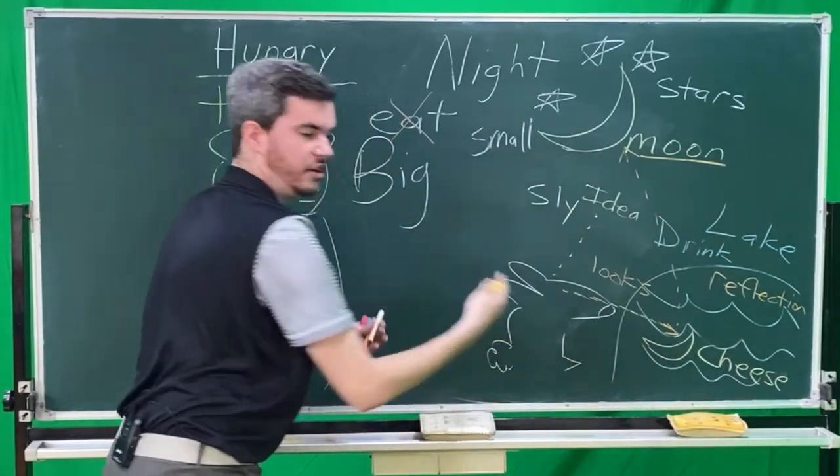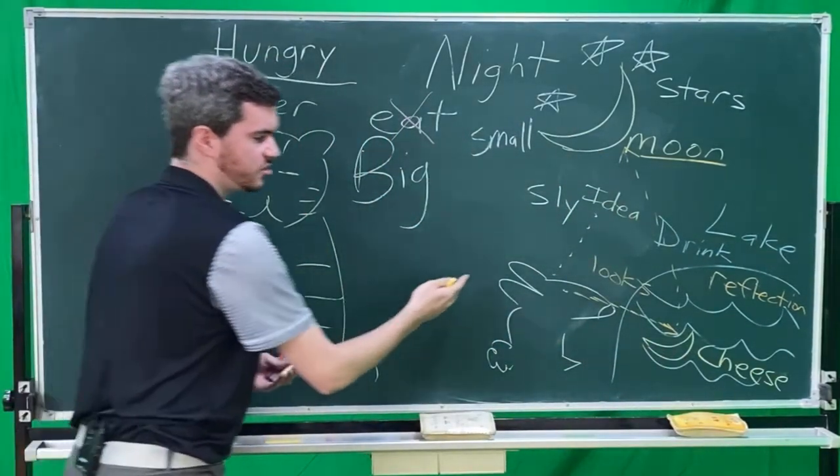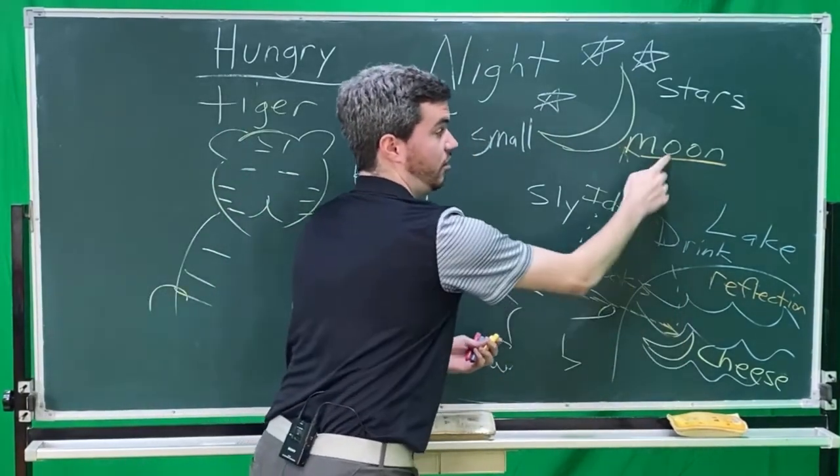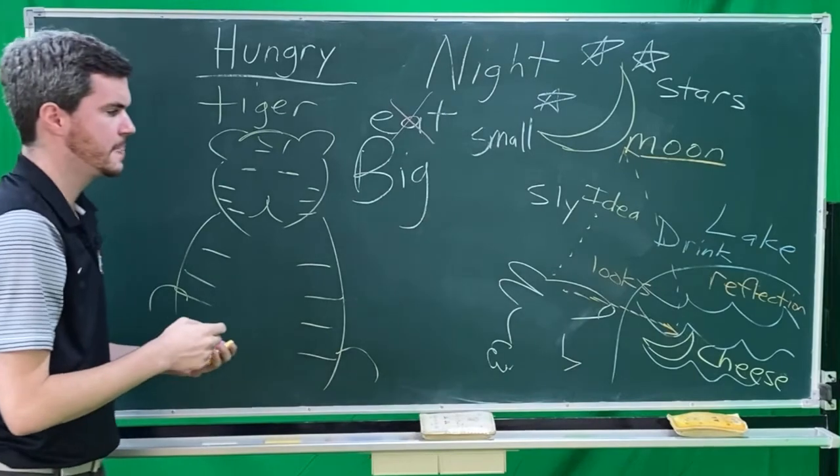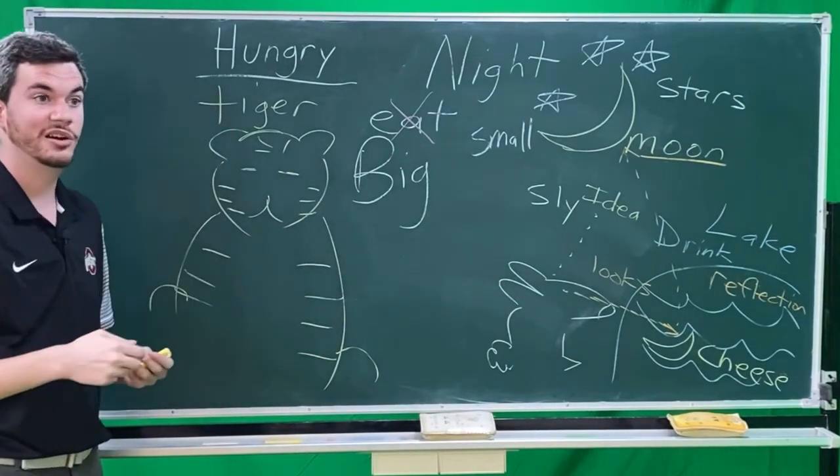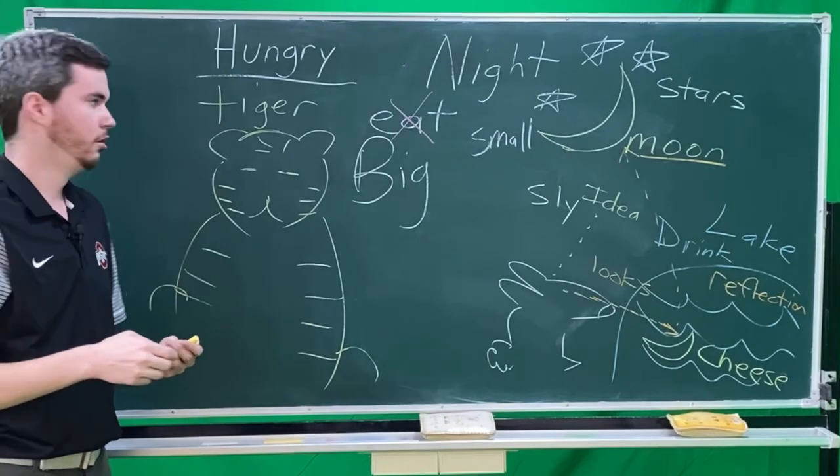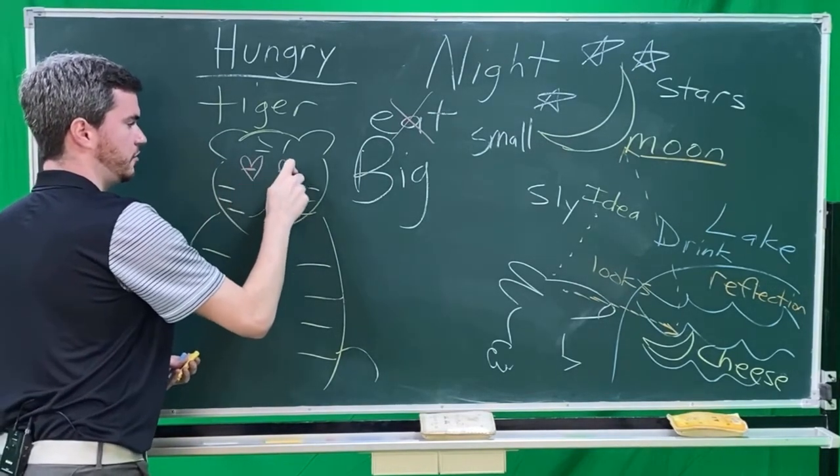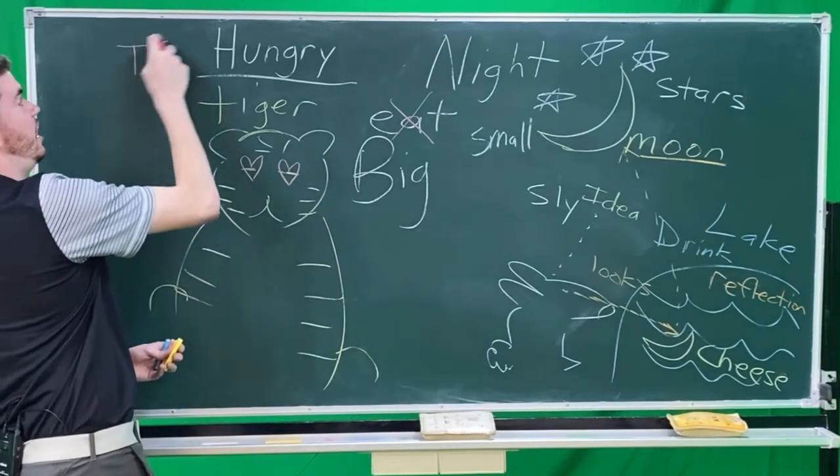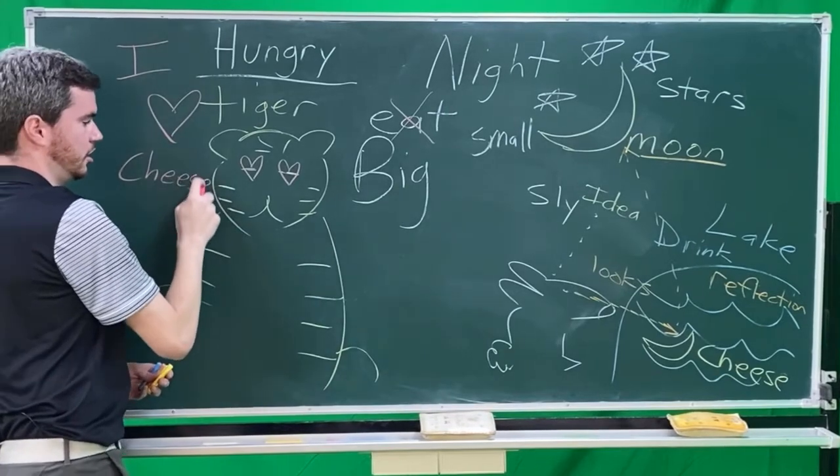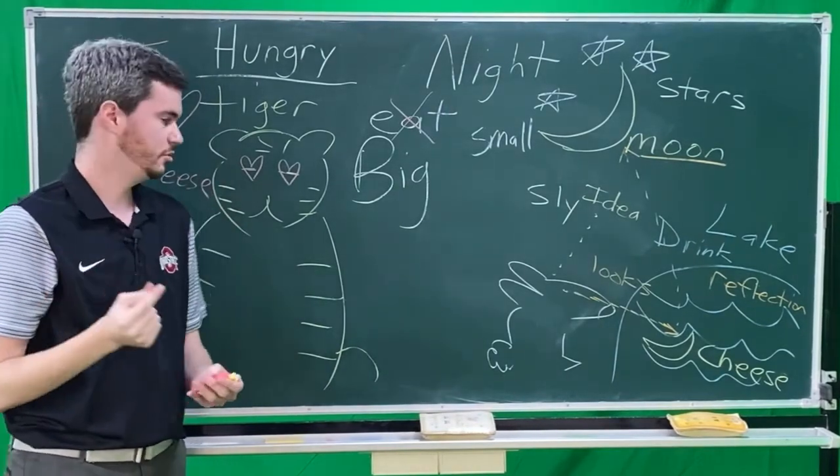A very big piece of cheese. The rabbit sees the reflection of the moon. The rabbit says, eat the cheese. And the tiger, OMG, I love cheese. The tiger says, I love cheese. I love cheese.